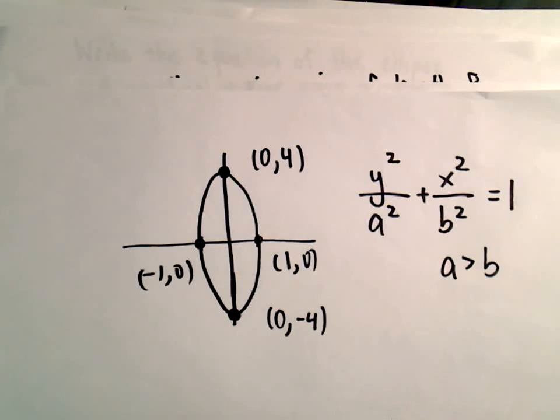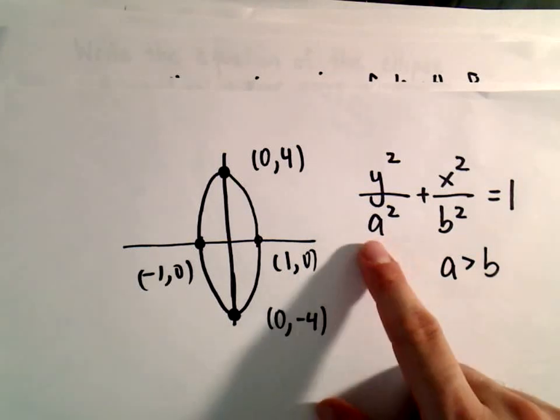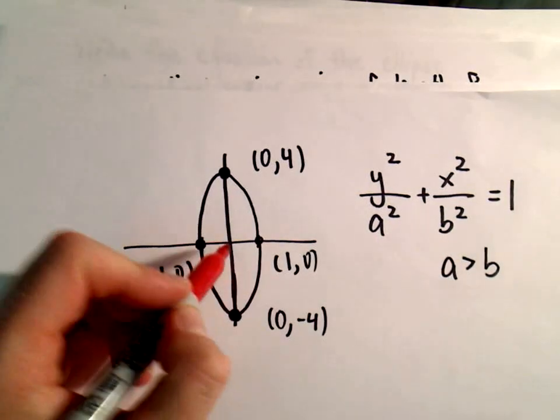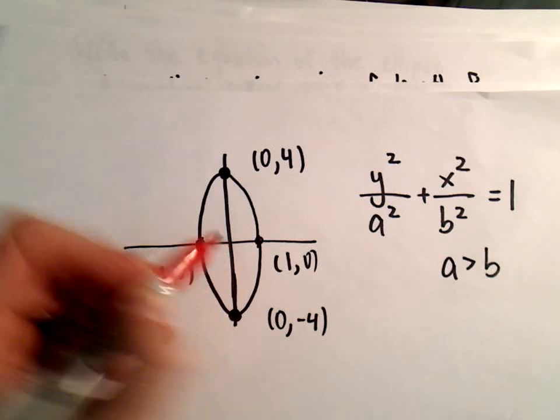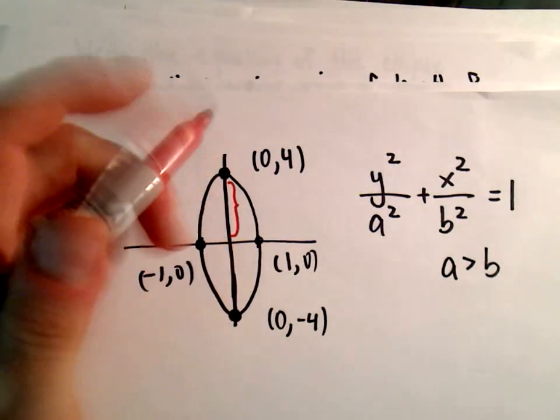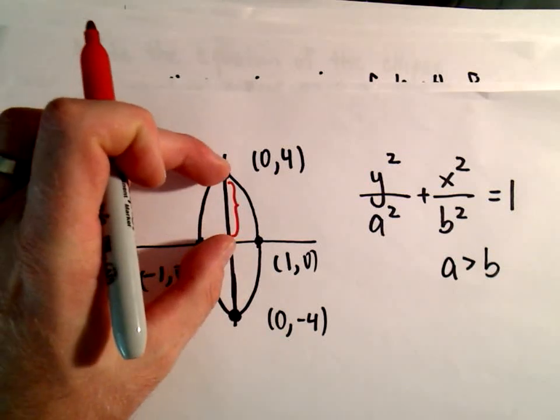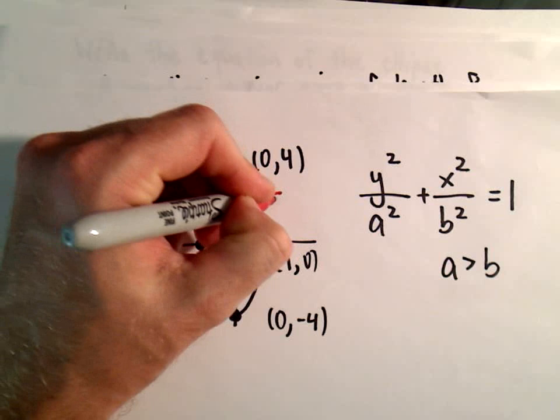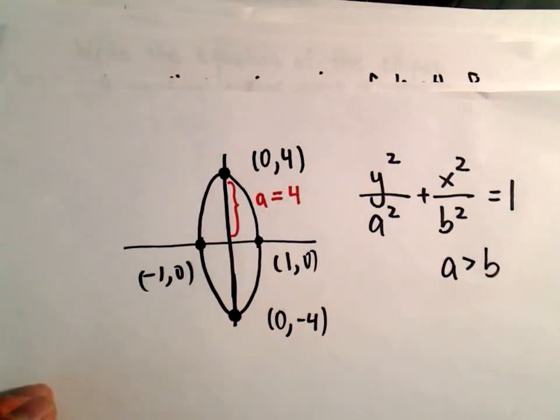So all we really have to do is just figure out the values of a and b. And to do this when it's centered at the origin, the distance from the origin to one of the vertices, that's going to be our a value. So in this case our a value simply equals 4.